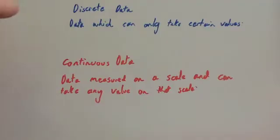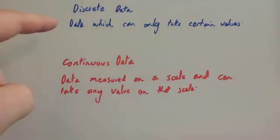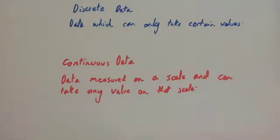In this video we're going to look at discrete data and continuous data. Discrete data is data that can only take certain values, such as shoe size — you can generally get shoe sizes such as four, four and a half, five, five and a half. There are only certain values you can take.